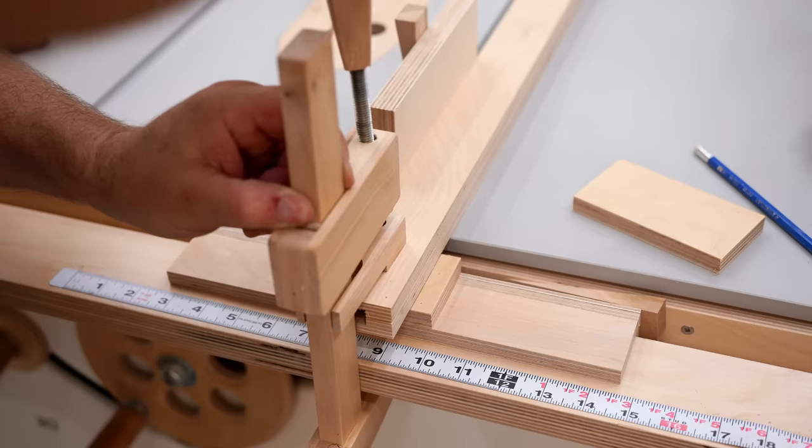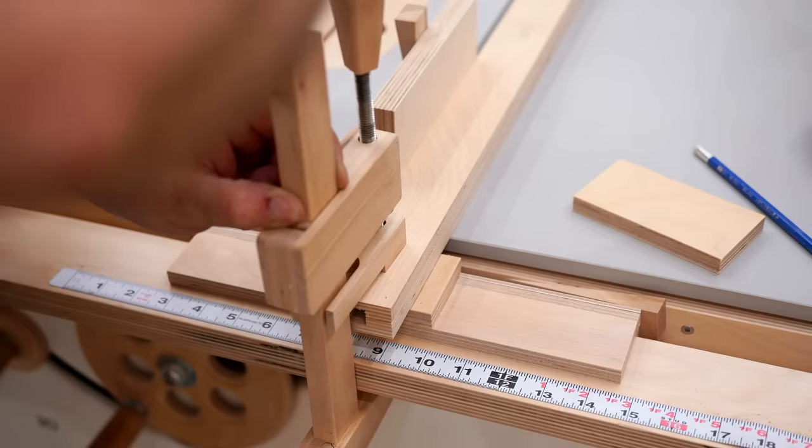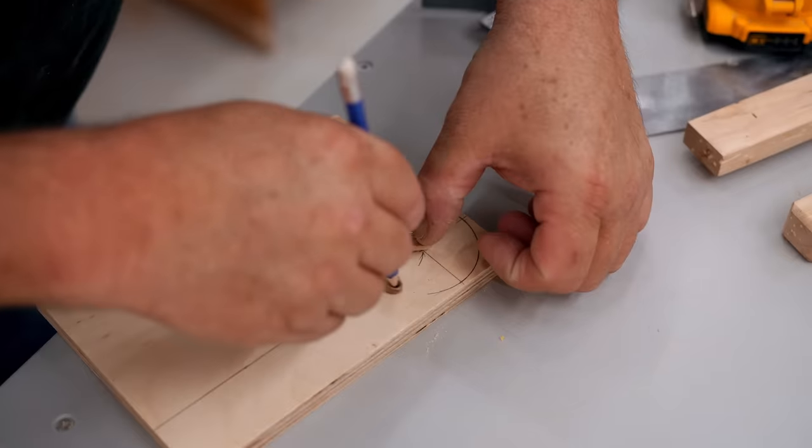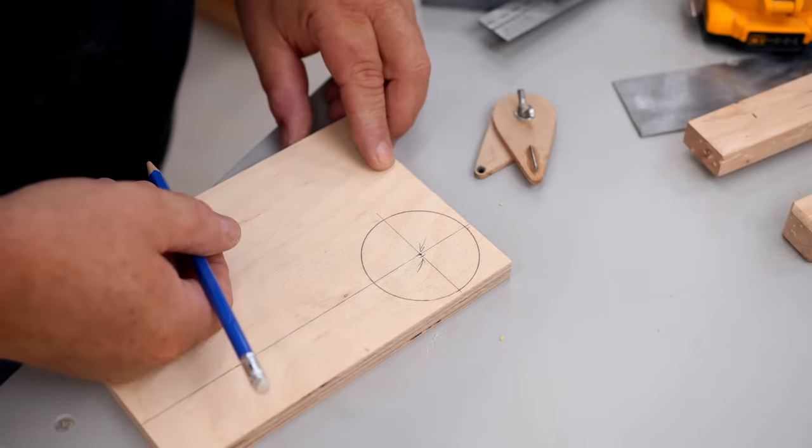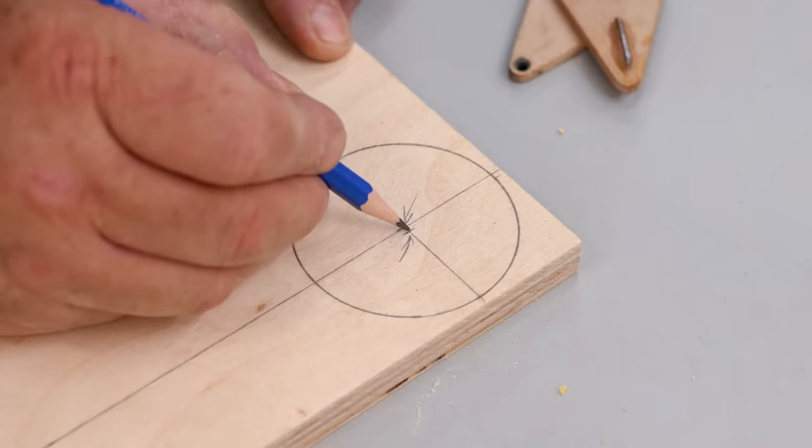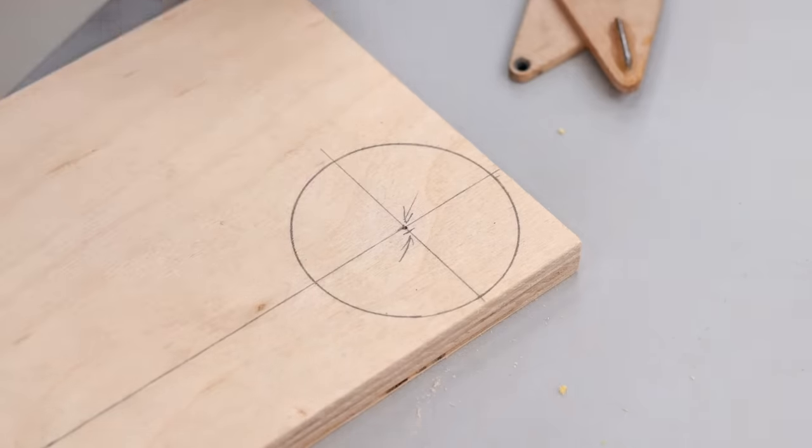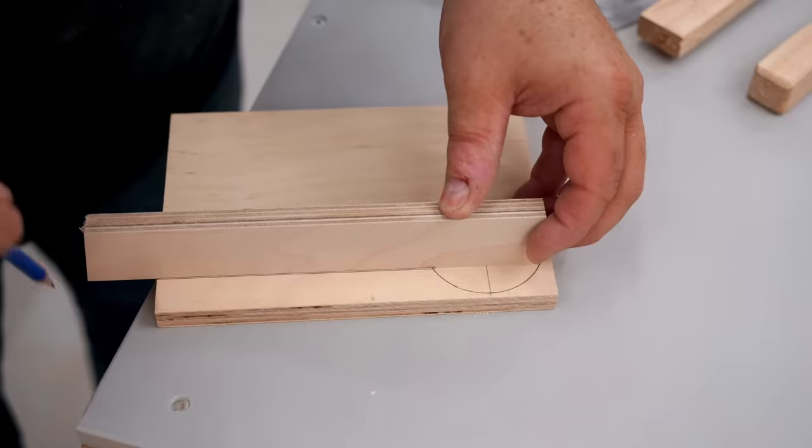While it's drying I can work on the cam handle, and this is the most complex part of the build. I started by laying it out on a piece of half inch plywood. The other mark that I have here that I'm pointing to right now is for the bearings that go in the cam handles.